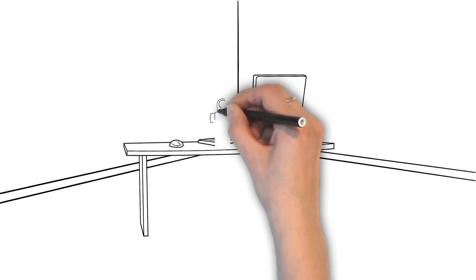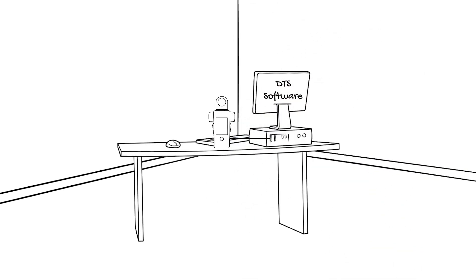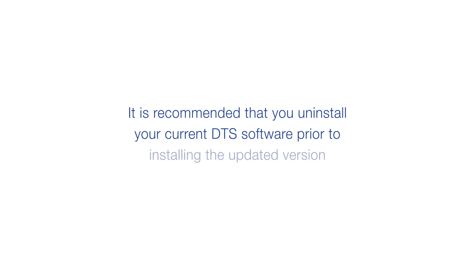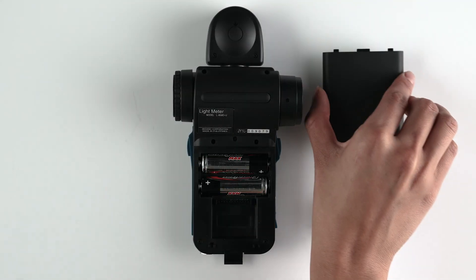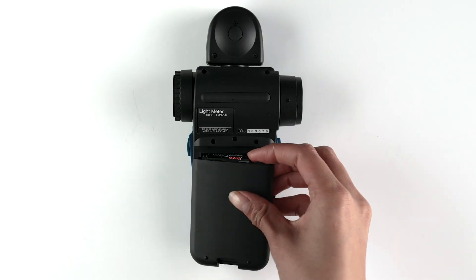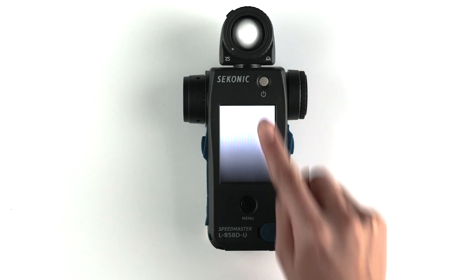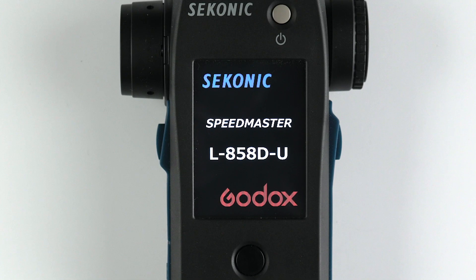First, let's start with connecting your meter to DTS software and making sure you have the most recent firmware. It is recommended that you uninstall your current DTS software prior to installing the updated version available at Sekonic.com. Remove the battery door and connector cover from the connector pins and insert the module in the back of the meter. Power on the meter and you should see the Godox logo on the bottom, signifying that the module has been properly installed.